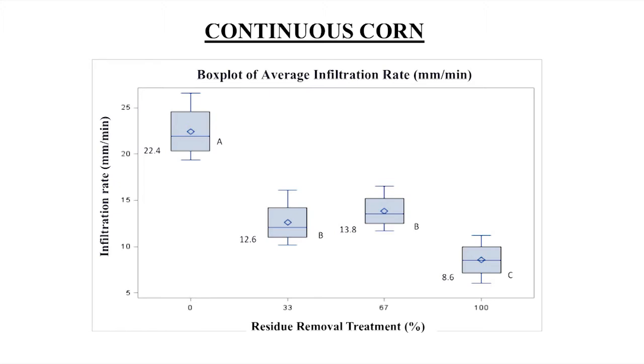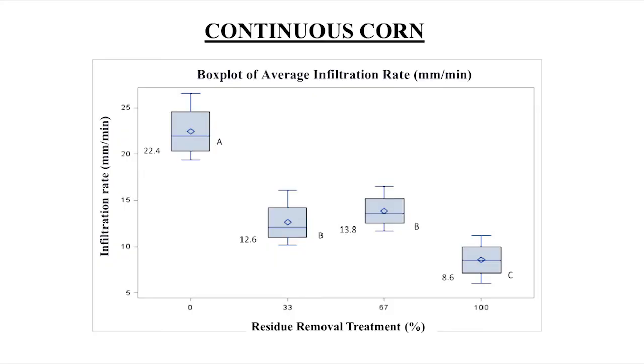Part of this was due, interestingly, to the fact that as we were putting our rings in and taking them out, there were many more earthworms in the zero percent removal and very few in the 100 percent removal. Earthworms feed on organic matter at the surface, so the zero percent actually had a lot of macro pores, which allowed the water to move through much faster than the 100 percent removal. That was an interesting observation we made.